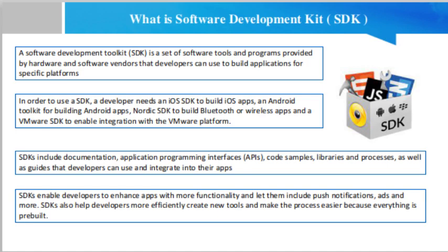SDKs include documentation, application programming interface code, samples, libraries, and processes, as well as guides that developers can use and integrate into their applications. Developers can use SDKs to build and maintain applications without having to write everything from scratch. More specifically, SDKs include libraries or APIs — predefined pieces of code that let developers perform common programming tasks on the platform.